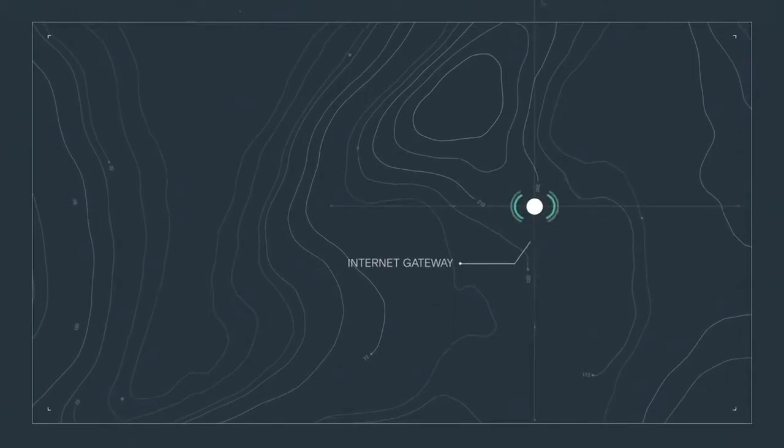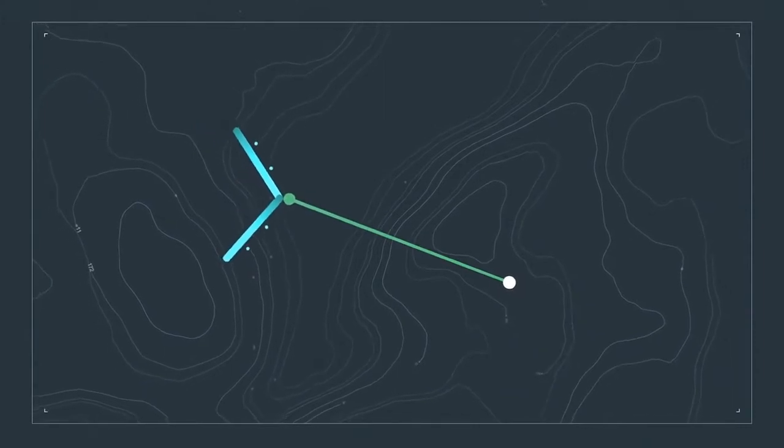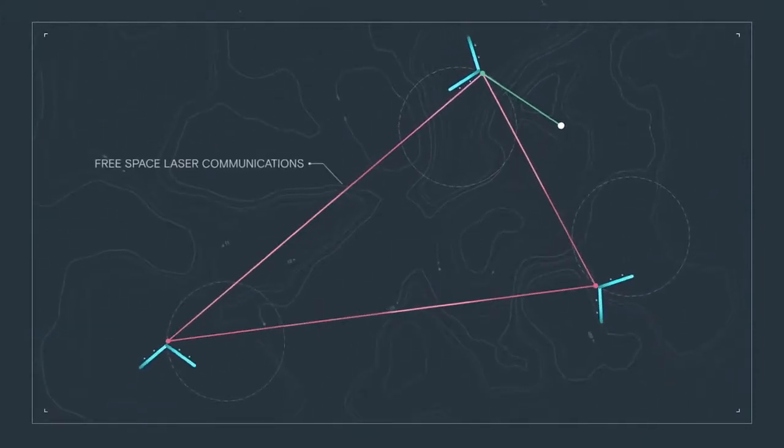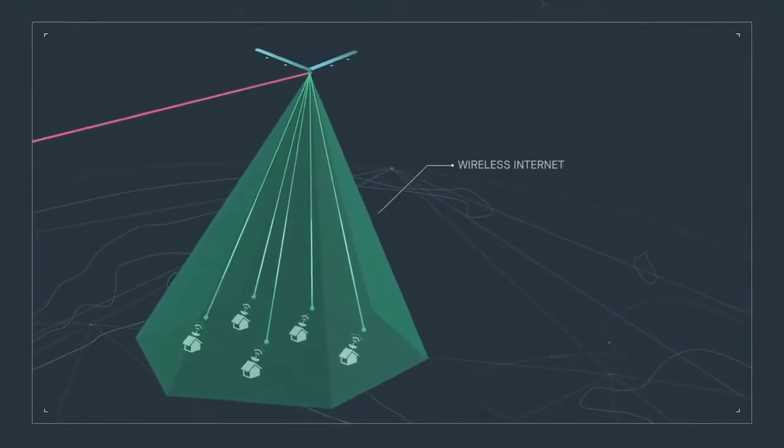A ground station will transmit a radio internet signal to a mother aircraft, and that will then feed other aircraft in the constellation using laser technology. And they will provide you radio internet coverage.